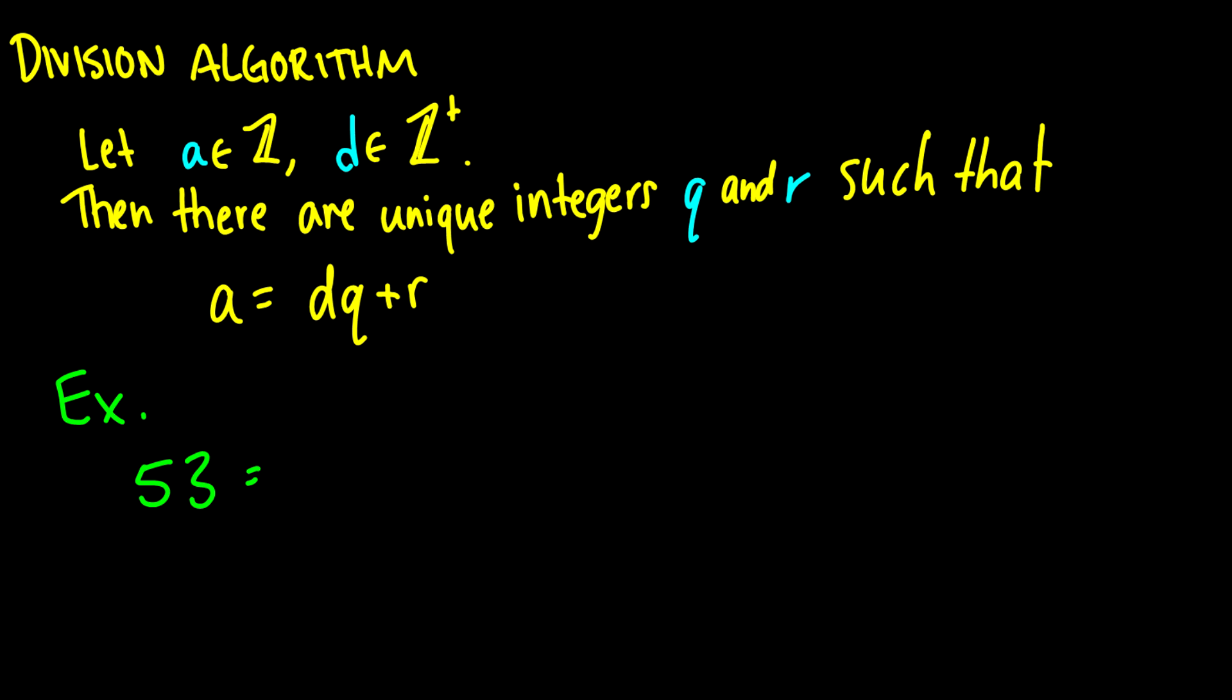Now, we're going to move into the division algorithm. And, what we say is, okay, let A be an integer, and D be a positive integer. Then, there are unique integers Q and R, such that A is equal to DQ plus R. So, basically, this means is any number has some divisor plus a remainder. And, you can break it up like this.